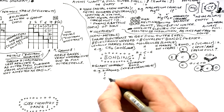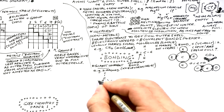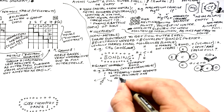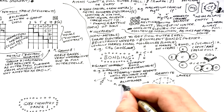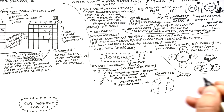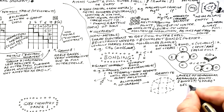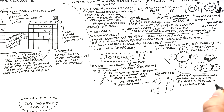Giant covalent structures occur when covalent bonds just carry on and on, making huge molecules. Diamond has carbons arranged in a 3D tetrahedral structure that repeats — it's one giant molecule. Graphite has layers of hexagonally arranged carbons. Each carbon bonds to only three others, so the spare (fourth) electrons are delocalized — free to move between layers, forming a weak bond between them, which means the layers can slide over each other. A single layer of graphite is called graphene.